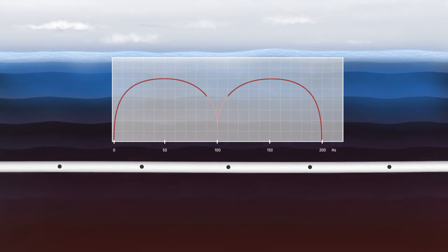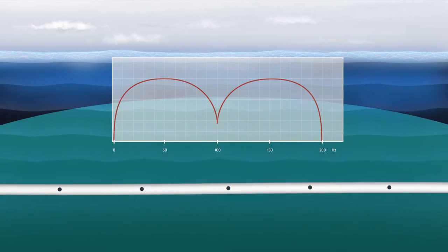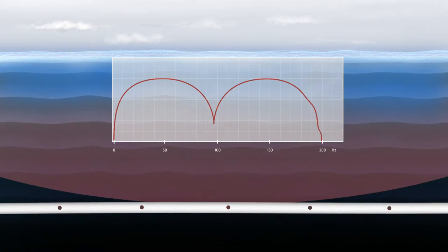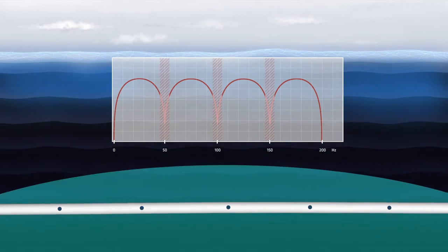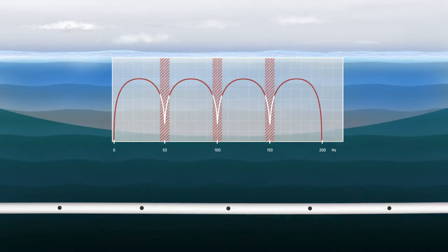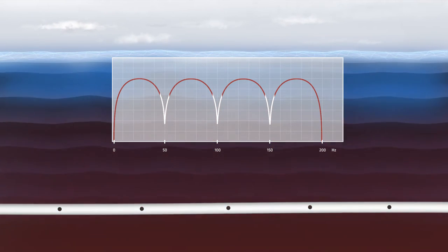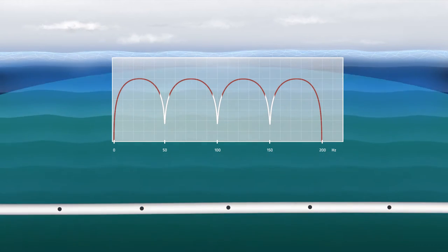Towing the streamer at greater depth will improve the ocean surface noise issue, but this creates a complication with the ghosting. Notches caused by the interference with the ghost change their central frequency and therefore affect different parts of the data.